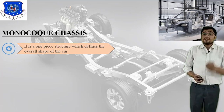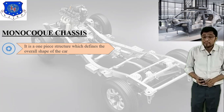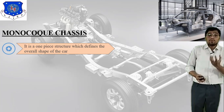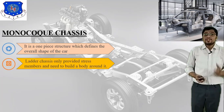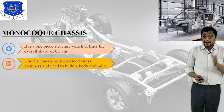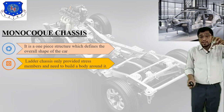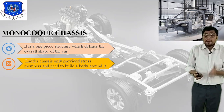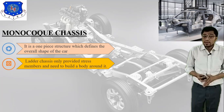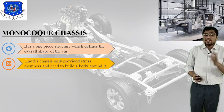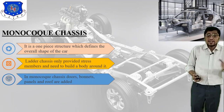The second type is the monocoque chassis. As you can see in the image, it is a one-piece structure which defines the overall shape of the car. Unlike the ladder chassis, which only provides a stressed member and needs a body built around it, the monocoque chassis is not a separate frame — it defines the shape itself. In monocoque chassis, door bonnets, panels, and roof are added to this one-piece structure.